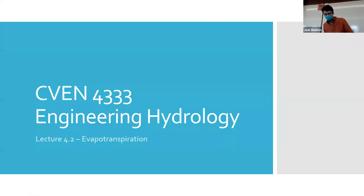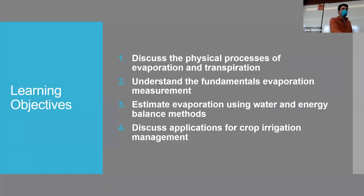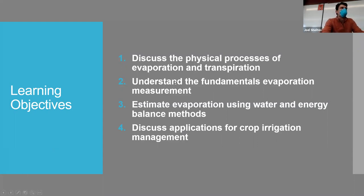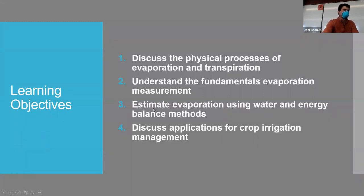So let's talk about evapotranspiration. Today we're going to discuss the physical processes of evaporation and transpiration. We usually talk about those in conjunction with each other — combined evapotranspiration. We'll understand the fundamentals of evaporation itself, the process and measuring it, which is hard to do. Rainfall is hard, snow is harder, evaporation is even harder to actually quantify without a lot of uncertainty. We'll estimate evaporation using water and energy balance methods — mass balance, energy balance — and then talk about how we can apply this for crop irrigation management.